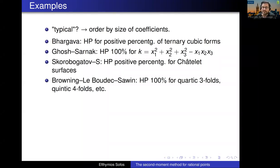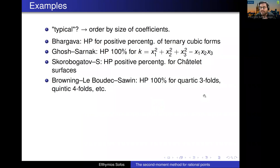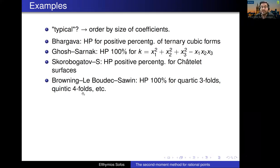Another result I really like, published last year in the Annals, is by Tim Browning, Pierre Lebouc, and Will Sawin. They proved that some very difficult varieties in a very small number of variables satisfy the Hasse principle with probability 100%. Examples include homogeneous equations of degree 4 in 5 variables, or degree 5 in 6 variables. These are really difficult — for the circle method to work you need at least the number of variables to be two times the degree. This result proves a conjecture of Björn Poonen.